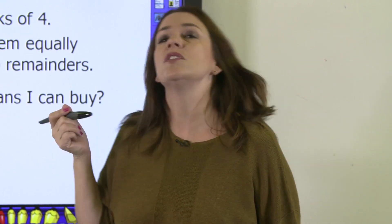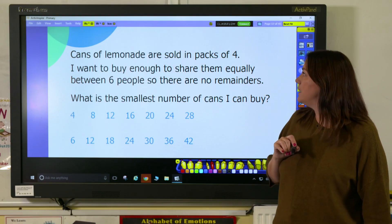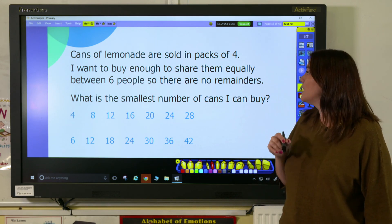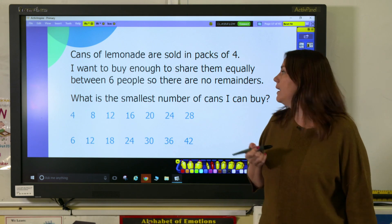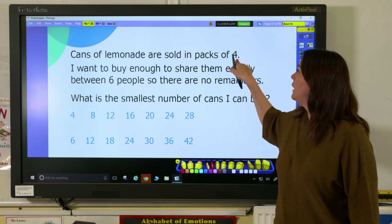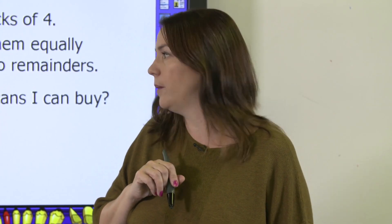We can also use the lowest common multiple to solve word problems. Here, cans of lemonade are sold in packs of 4. I want to buy enough to share them equally between 6 people so there are no remainders. What is the smallest number of cans I can buy? So here, my key numbers are 4 and 6. So I need to know what the multiples of 4 and 6 are to be able to answer the question.